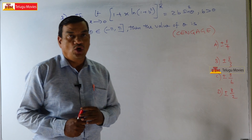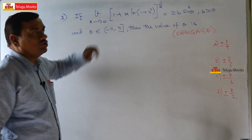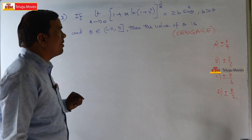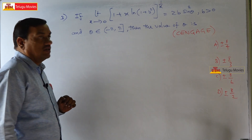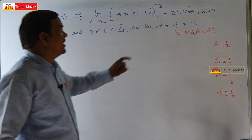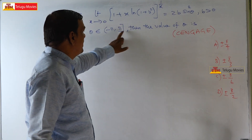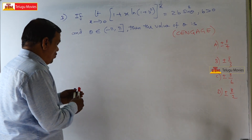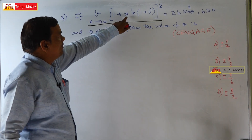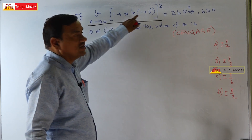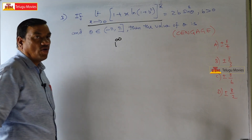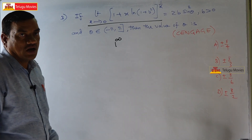Dear students, welcome to the third problem. If limit x→0 of (1 + x·ln(1+b²))^(1/x) = 2b·sin²θ, where b > 0 and θ ∈ (-π, π], then find the value of θ. Apply limit x→0: substituting 0 gives 1^∞ form, since (1+0) = 1 and 1/x → ∞.